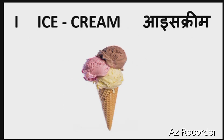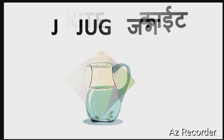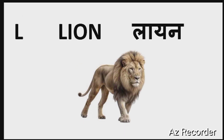I for Ice Cream, J for Jug, K for Kite, L for Lion.